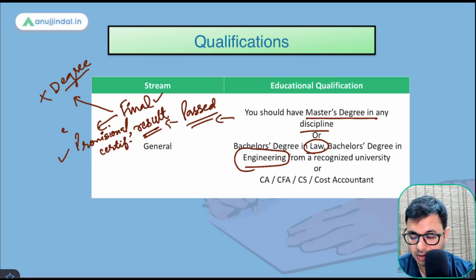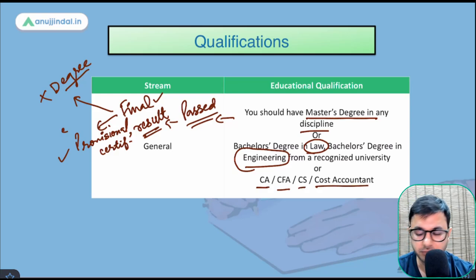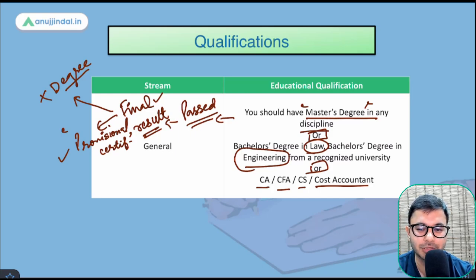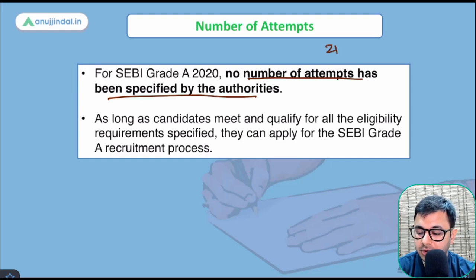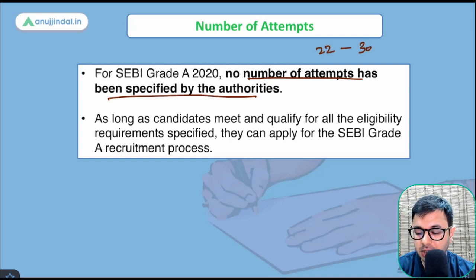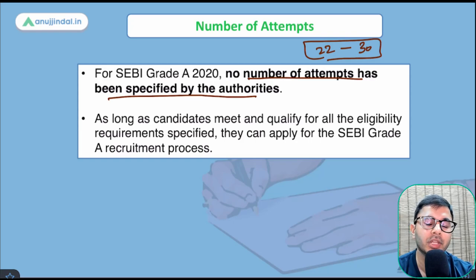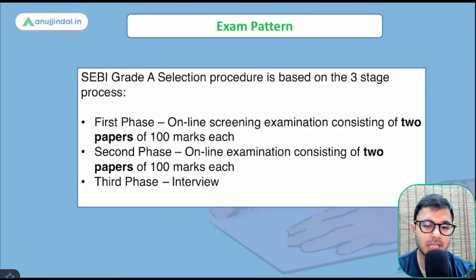If you are a Chartered Accountant, CFA, CS, or Cost Accountant, you don't need a master's degree — there is an 'or' here. So if you're a CA with a bachelor's degree, you are very well eligible. Regarding number of attempts — no number of attempts has been specified by the authorities. So from the moment you complete your master's by around age 22 until you turn 30, you have about eight to nine years to write any number of attempts.